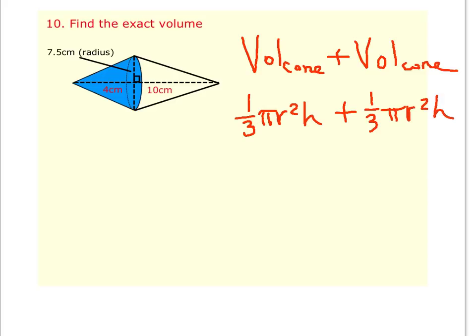You'll see that the radius is the same for both cones. The only thing that's different is the height. So for the first one, I'm going to do 1/3 times π times 7.5² times 4. And for the second one, it's going to be exactly the same thing, 7.5², but the height is 10.